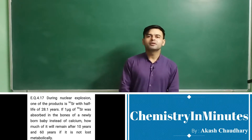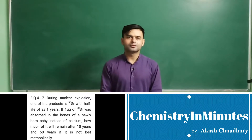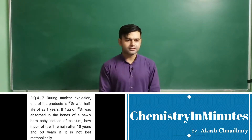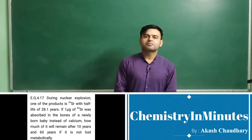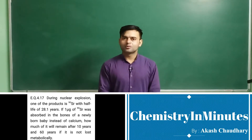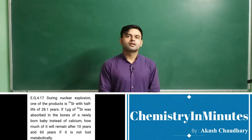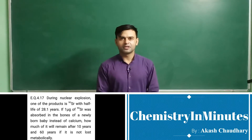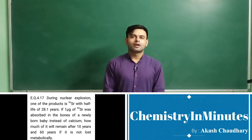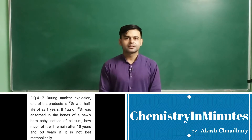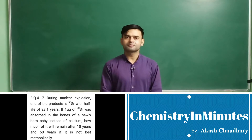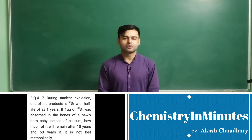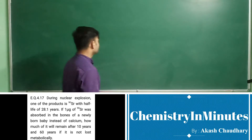Here we have 90Sr with a half-life given as 28.1 years, and 1 microgram of 90Sr absorbed in a newly born baby's bones. We have to calculate the amount remaining after 10 years and 60 years. Let's start solving this.